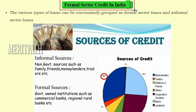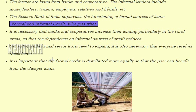The various types of loans can be grouped as formal sector loans and informal sector loans. Informal sources are non-government sources such as family, friends, money lenders, and traders, whereas formal sources are government-owned institutions such as commercial banks and regional rural banks. Formal sector loans come from banks and cooperatives, while informal lenders include money lenders, traders, employers, relatives, and friends. The Reserve Bank of India supervises the functioning of formal sources of loans.